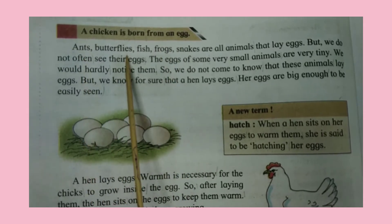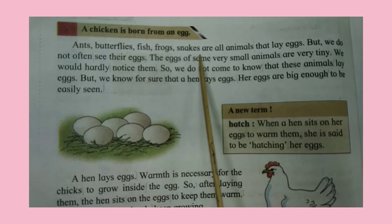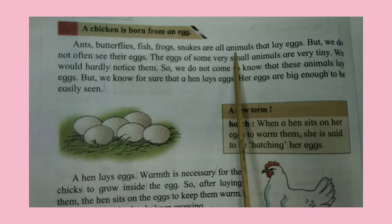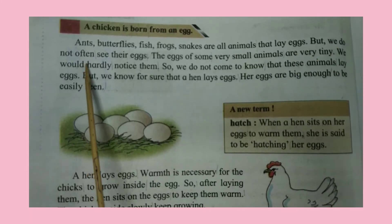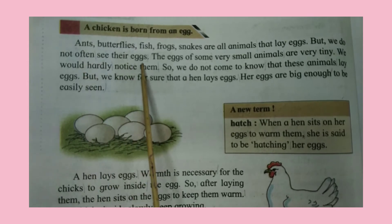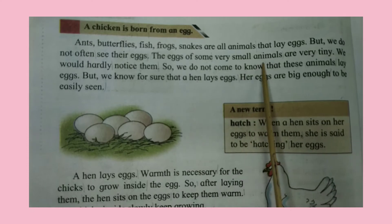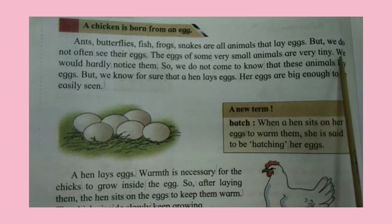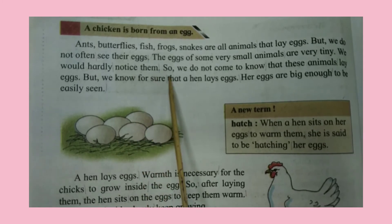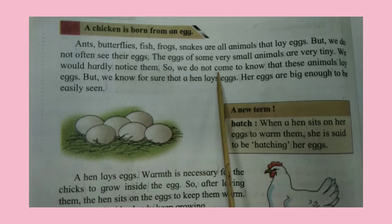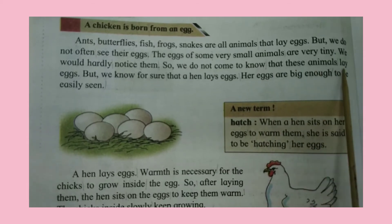Ants, butterflies, fish, frogs, and snakes are all animals that lay eggs. But we do not often see their eggs. The eggs of some very small animals are very tiny. We would hardly notice them. So we do not come to know that these animals lay eggs.